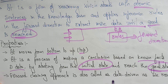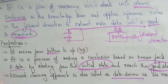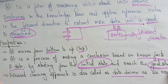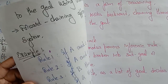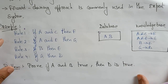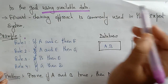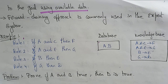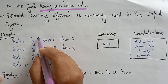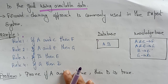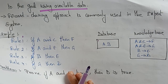The forward chaining approach is also known as data-driven. We call it data-driven because we reach the goal using the available data. That's why forward chaining is called data-driven. The forward chaining approach is commonly used in expert systems.